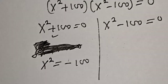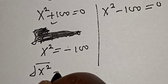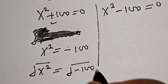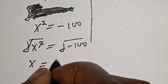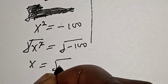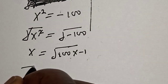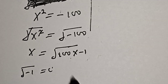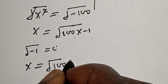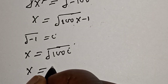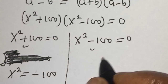Let's work with the first case: s² + 100 = 0, so s² = −100. Taking the square root of both sides, s = √(−100). Since √(−1) = i, we get s = √100 · i, therefore s = ±10i.